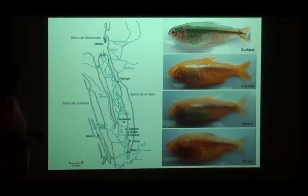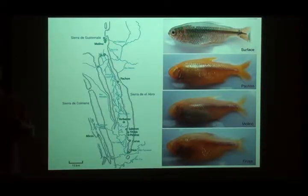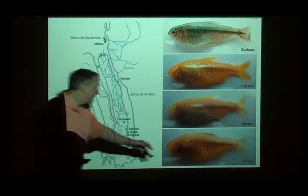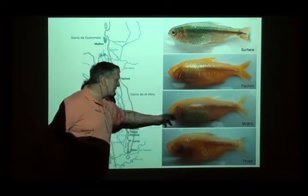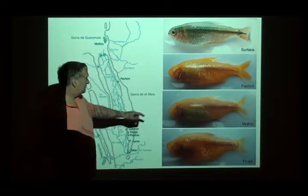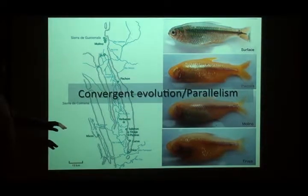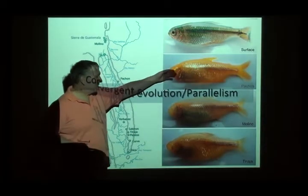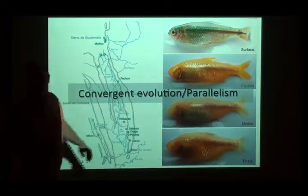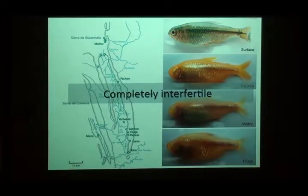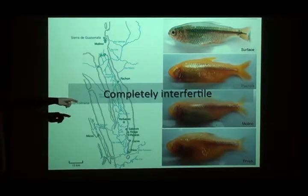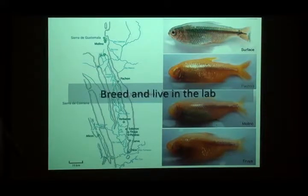Importantly for doing genetics, all different cave populations are interfertile with each other and with the surface fish. They can breed and live in the lab, as they do in Penny's lab and in my lab. The people who did this work are post-doc Misty Riddle, graduate student Ariel Aspras, and former post-doc Nick Rohner, who started the project with me and is now at the Stowers Institute.